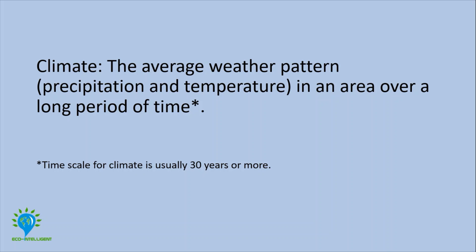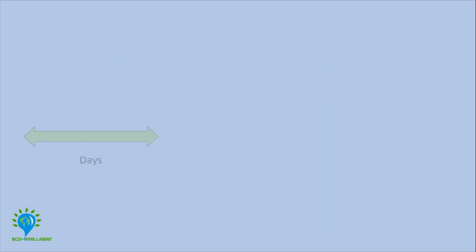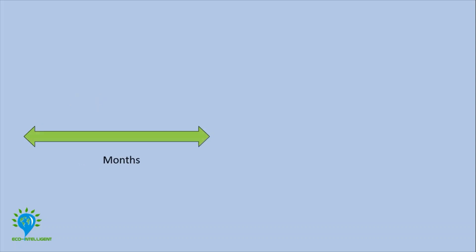When we observe precipitation and temperature over the course of a few days, it's called weather. Weather is constantly changing. When we look at weather patterns over the course of a few months, we get seasons. For example, in the northern hemisphere, May, June, and July is the summer season.